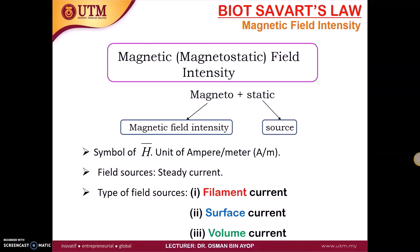The magnetostatic field intensity can be divided into 'magneto,' which refers to the magnetic field intensity, and 'static,' which refers to the type of source. The symbol of magnetic field intensity is H-bar, and the unit is ampere per meter. The field source is steady current.